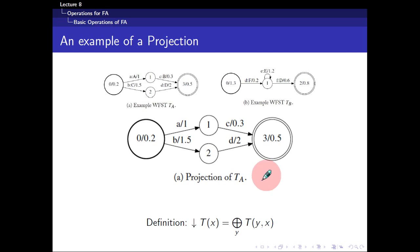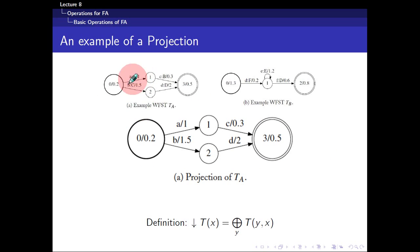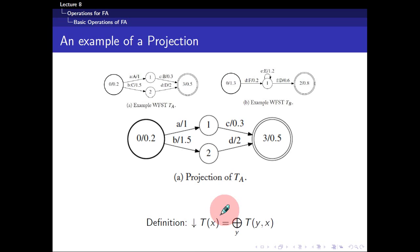Finally, projection reduces a transducer to an acceptor. You simply remove one of the labels — for example, you take away the output, leaving only the input x. Therefore you have an acceptor instead of a transducer.